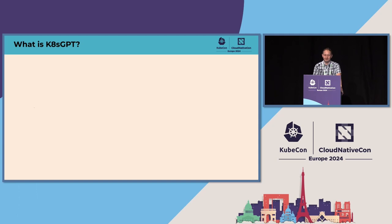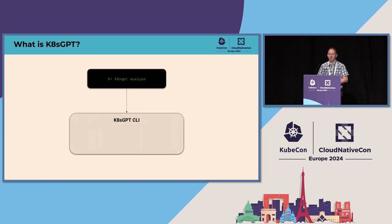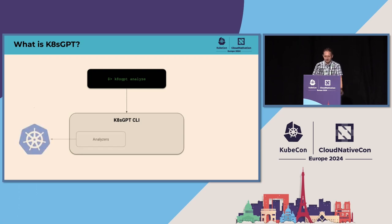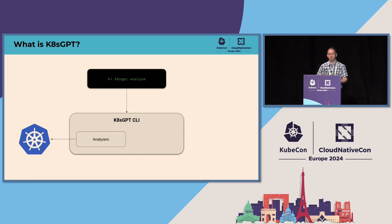So what is K8sGPT? Initially it was only a CLI. The first command we had was k8sgpt analyze, and with that command, no AI was in place. The second thing we added was an explain mode, which sent some data to OpenAI and got information back. The K8sGPT CLI consists of analyzers such as a pod analyzer, deployment analyzer, and so on, which try to find problem patterns.